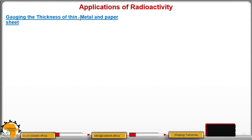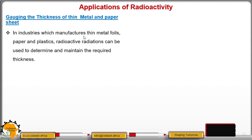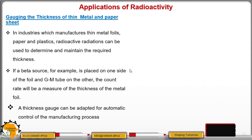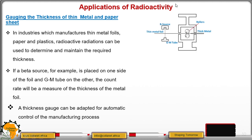Then we have gauging the thickness of thin metal or paper sheets. In industries that manufacture thin metal foils, papers, and plastics, radioactive radiations can be used to determine and maintain the required thickness. A beta source is placed on one side of the foil, and a GM tube — a Geiger-Muller tube that detects the presence of radiation — is placed on the other side. The count rate is measured to determine the thickness of the metal foil.